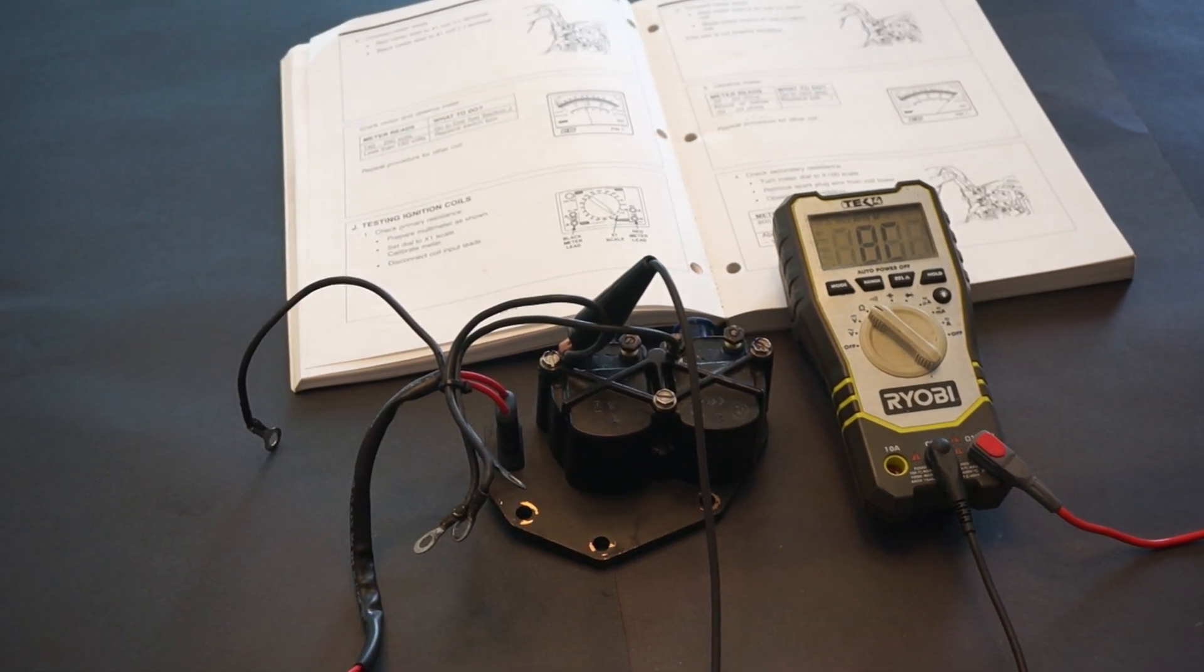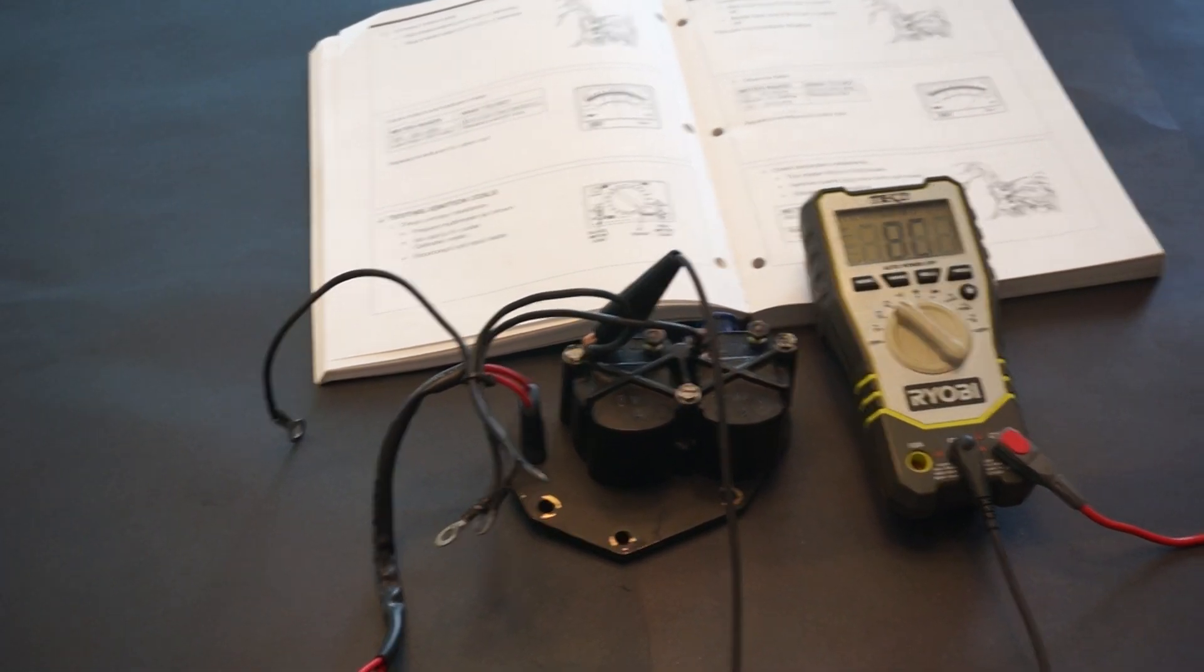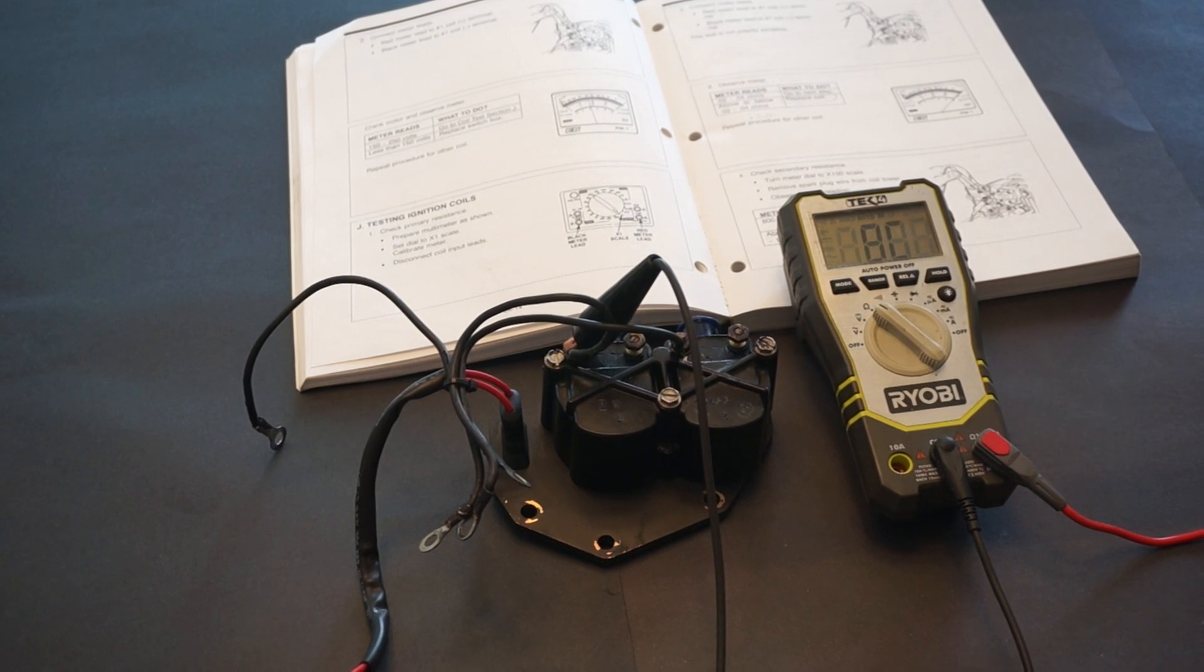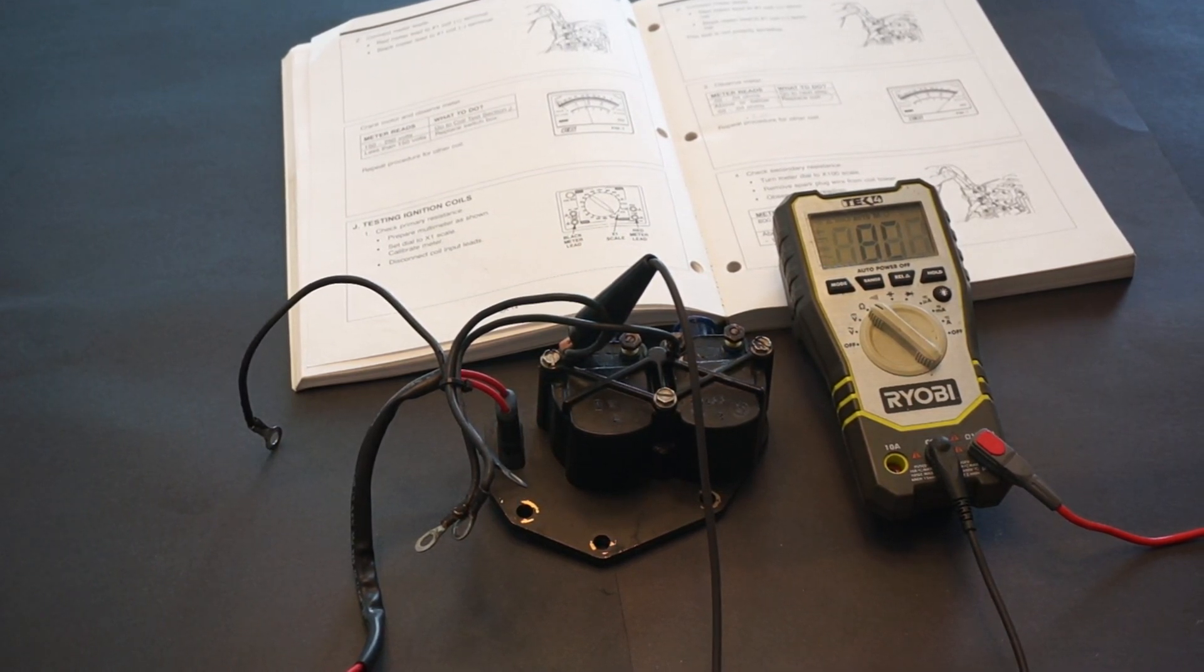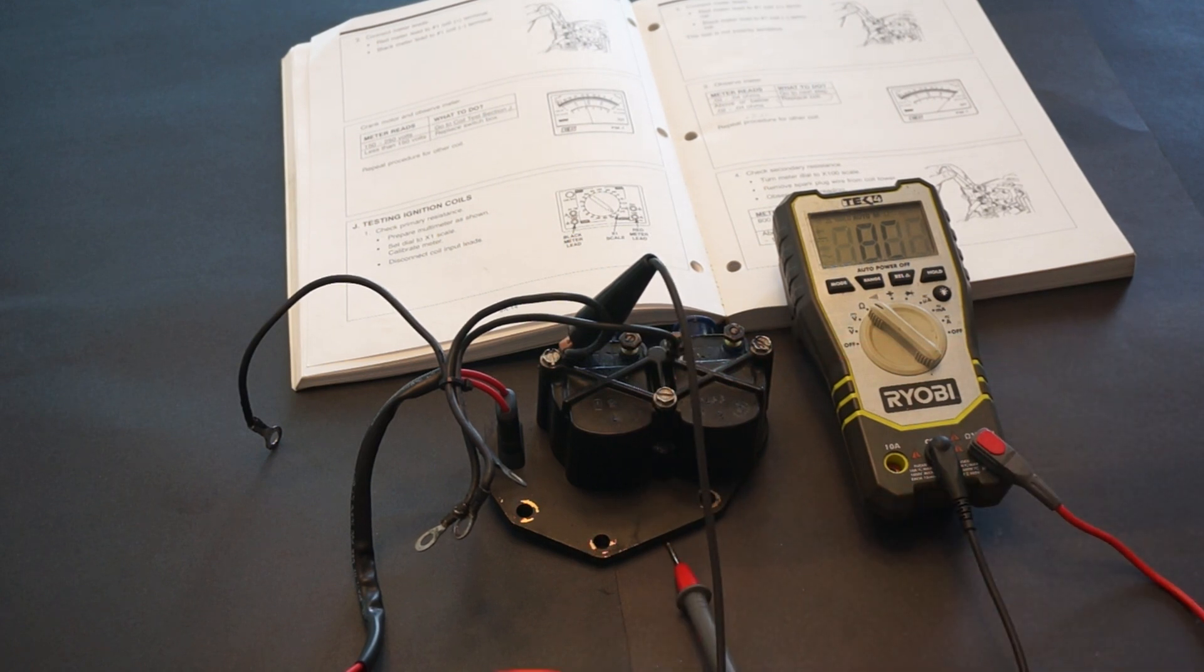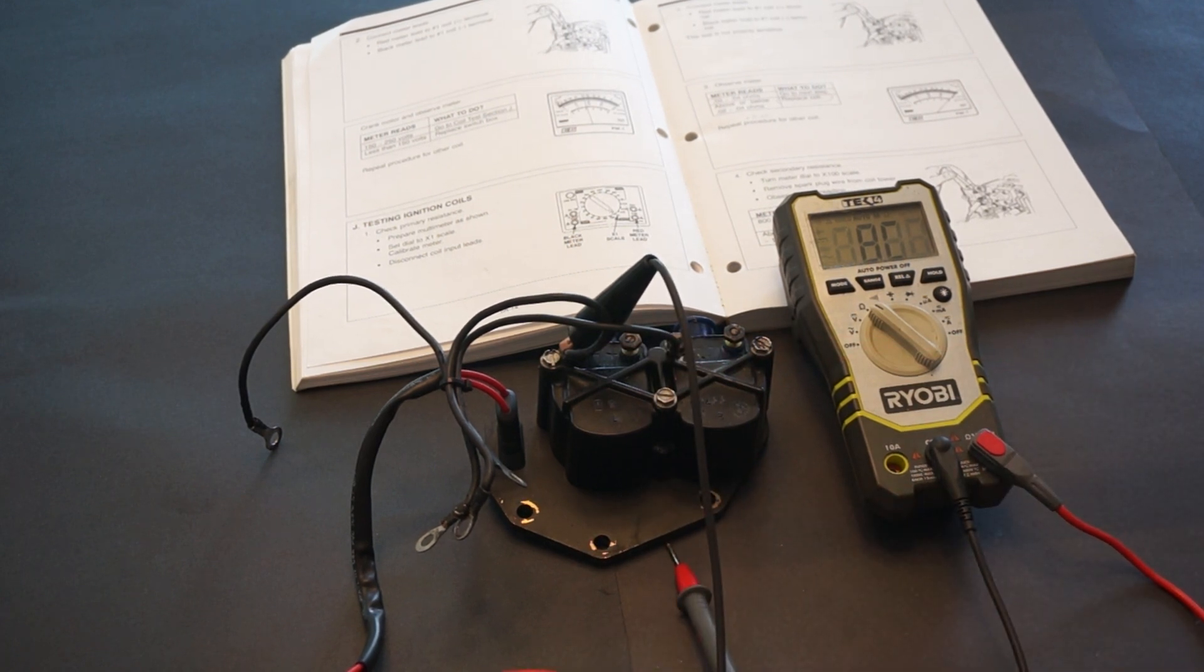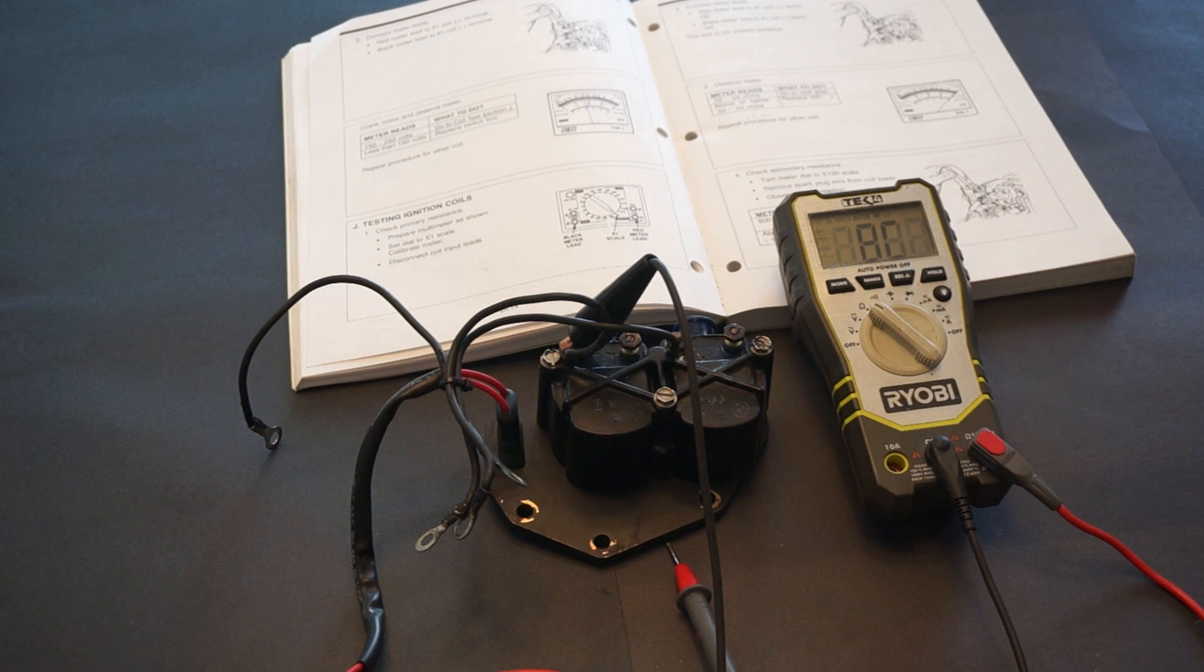Hello everyone, Frank with Clean Carburetor. We're gonna show how to test the ignition coil in this video. This particular coil is from an outboard two-stroke two-cylinder 40 horsepower Mercury.